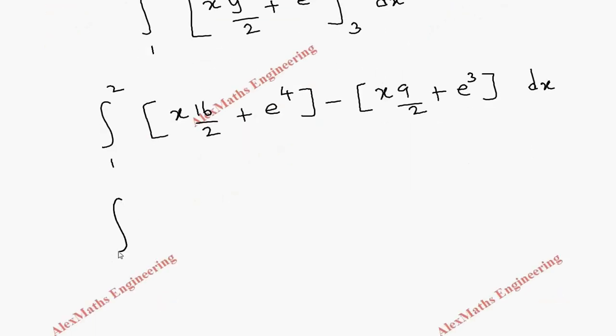And finally we have integral 1 to 2. This is 16x by 2 and this is minus 9x by 2. And this is e power 4 then minus e power 3 and finally into dx.